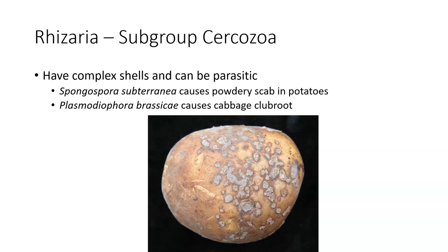The last little group within Rhizaria is Cercozoa. One example shown here is powdery scab from potatoes — a different species entirely from the Irish potato famine one, Phytophthora. But this one can also end up reducing yields. Plasmodiophora brassicae causes cabbage club root. These organisms don't directly hurt people, but they hurt the things people eat, so they can cause starvation if there isn't a good food supply network in a specific area.